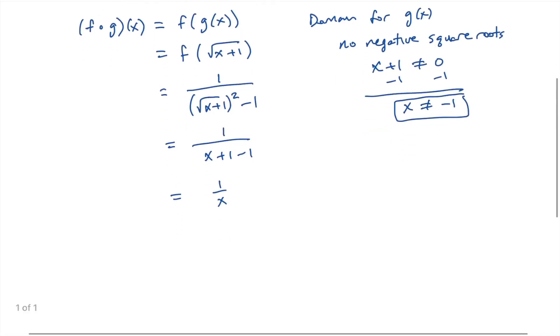Now we look at the domain of f composed with g of x. This is one over x, so we can have no division by zero. So x is not allowed to be zero.